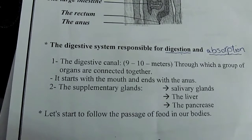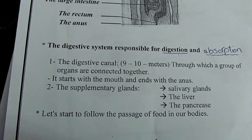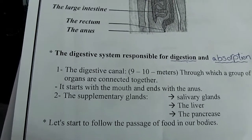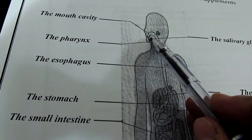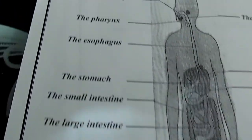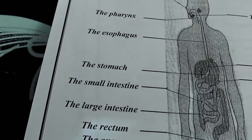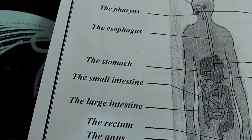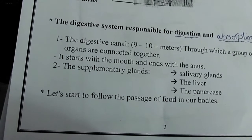The main digestive canal has a length of nine to ten meters, through which a group of organs are connected together. It starts with the mouth and ends with the anus. Now let's follow the passage of food through our digestive system.